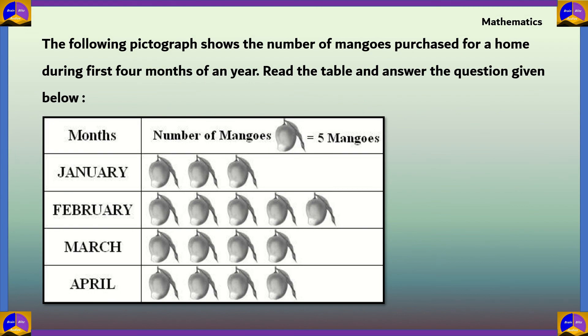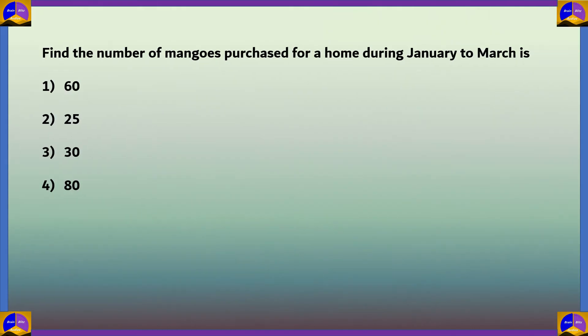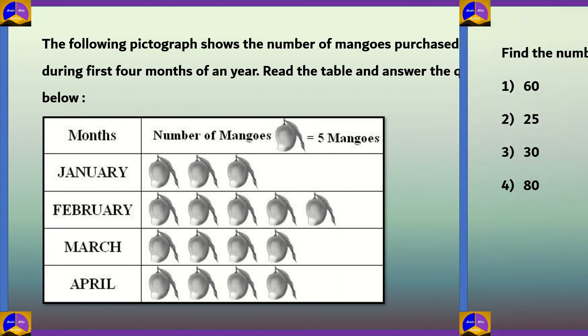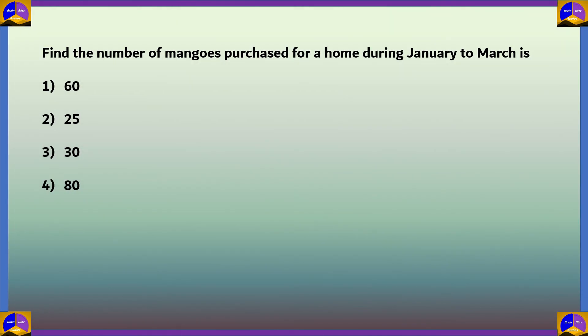Next question: The following pictograph shows the number of mangoes purchased for a home during the first four months of a year. Read the table and answer the question: Find the number of mangoes purchased from January to March — option 1: 60, option 2: 25, option 3: 30, option 4: 80.